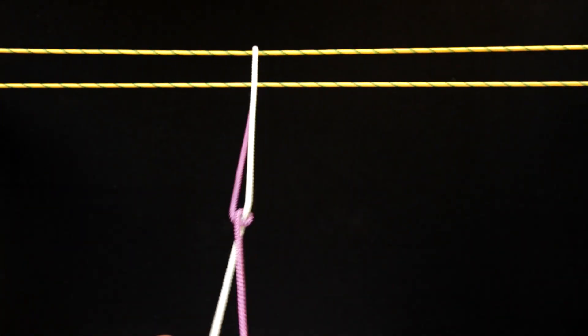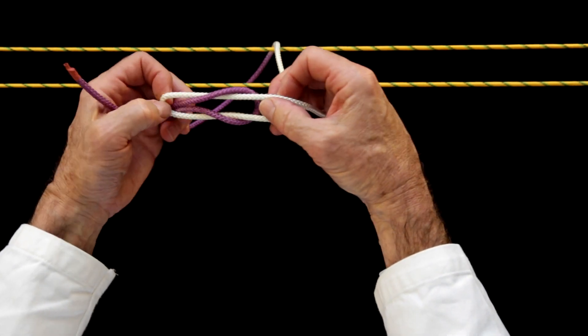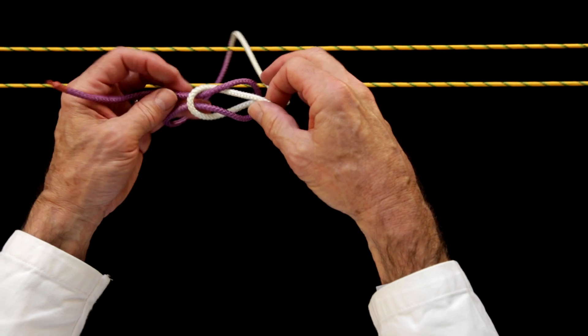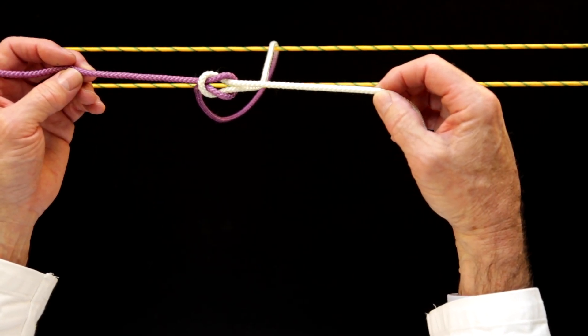Throwing two successive loops in opposite directions produces a classic square knot. Pulling on the two free ends of a square knot in opposite directions will tighten and lock the knot. Notice that all of the tightening occurs within the knot.